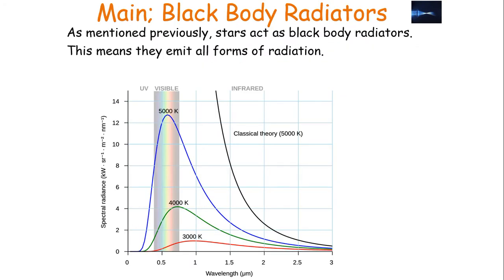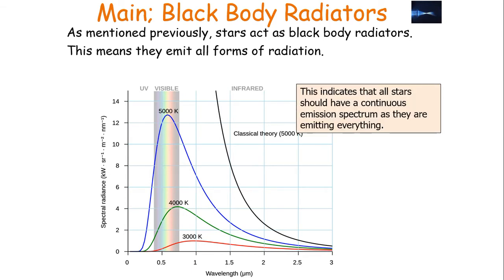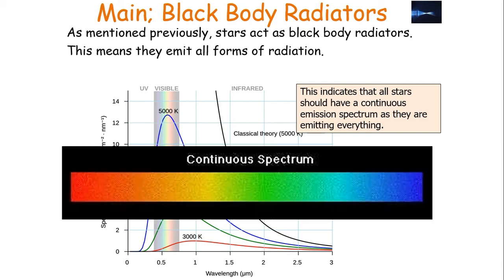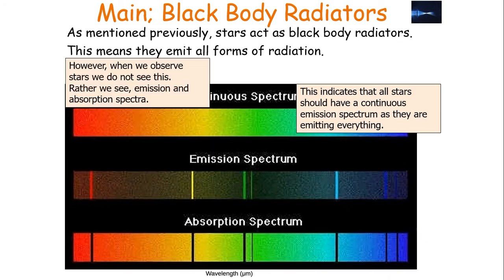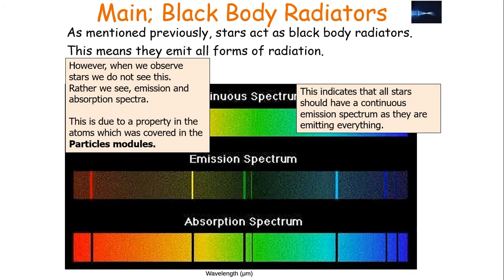As mentioned previously, stars act as blackbody radiators. This means they emit all forms of radiation, which indicates that all stars should have a continuous emission spectrum. So you should be observing a continuous spectrum for a star. However, when we observe stars, we do not actually see this — we see emission and absorption spectra.